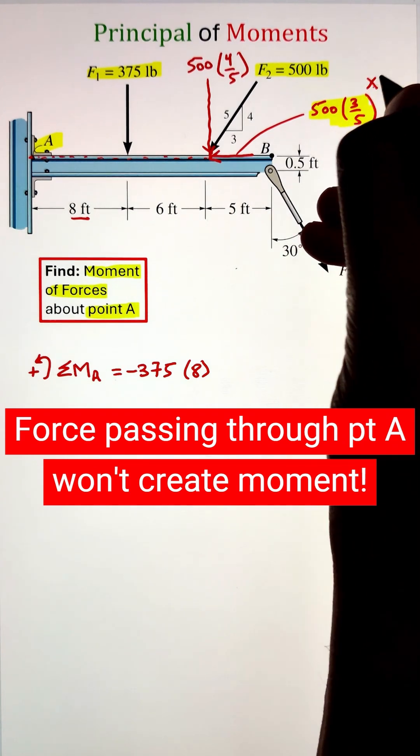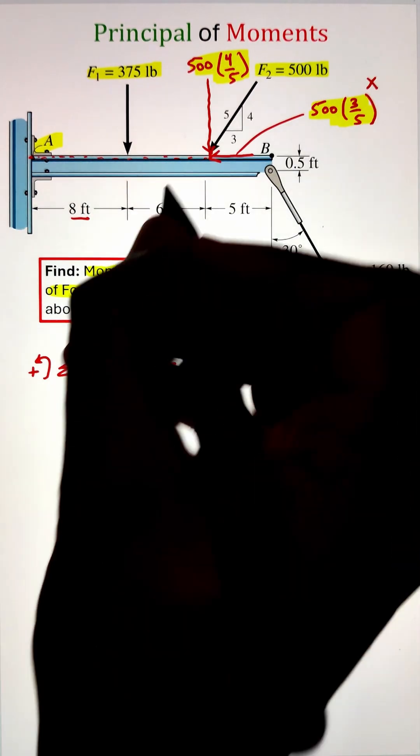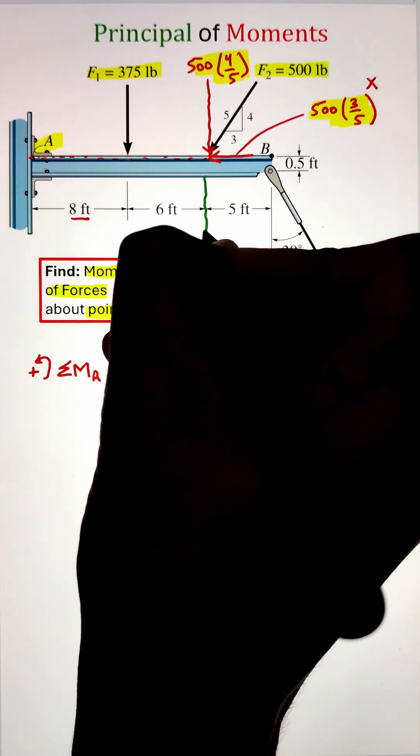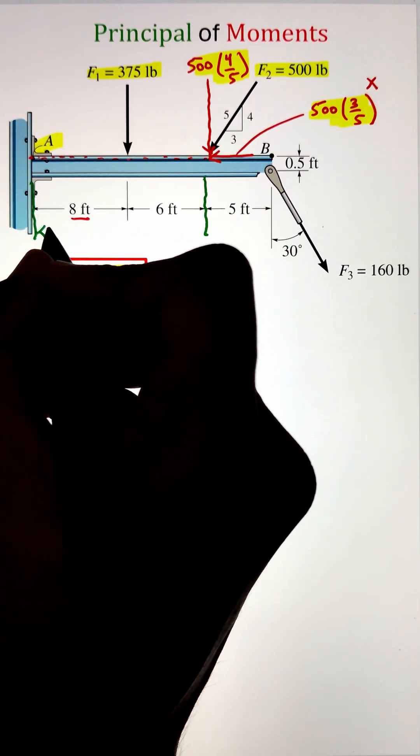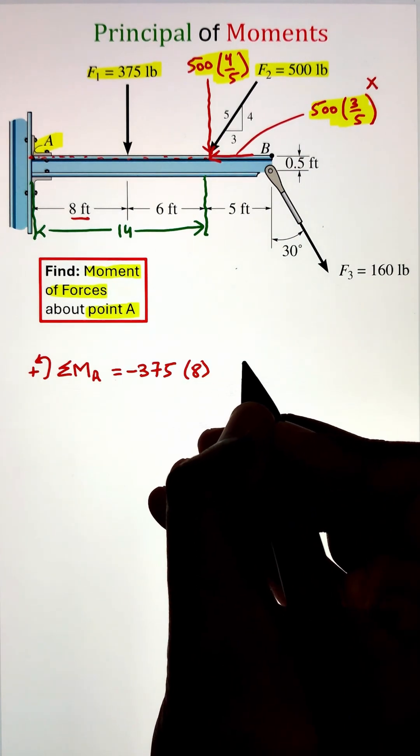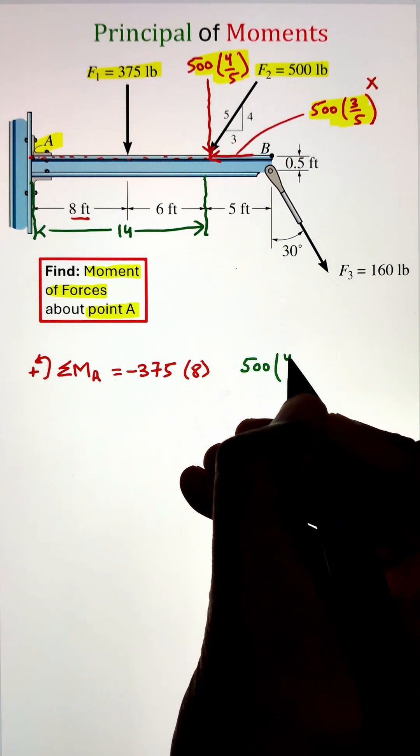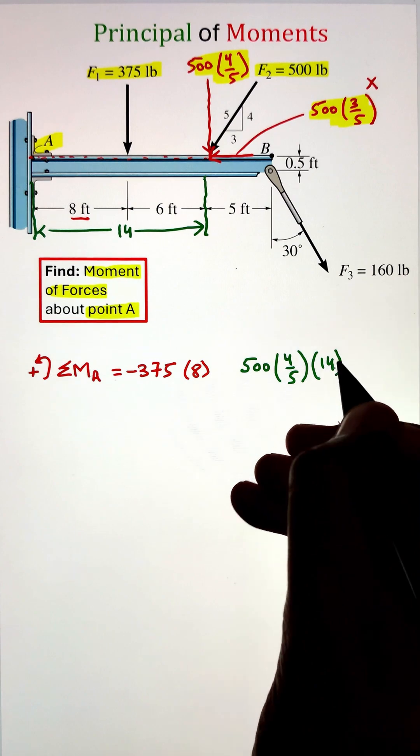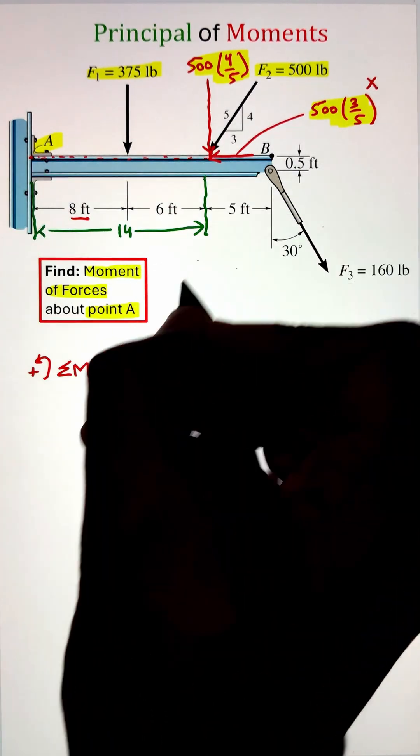Starting with the horizontal component, since the force vector is in the line of action of point A, it is not going to create any moment or turning effort. This force vector is basically pushing point A. Next, the vertical component will make a moment having a moment arm of 14 feet. Again, this is making a clockwise rotation.